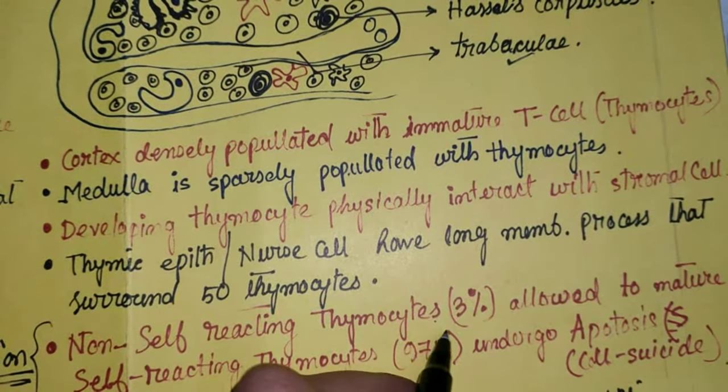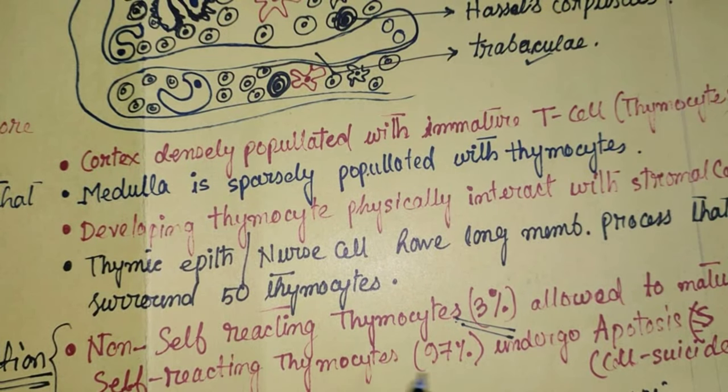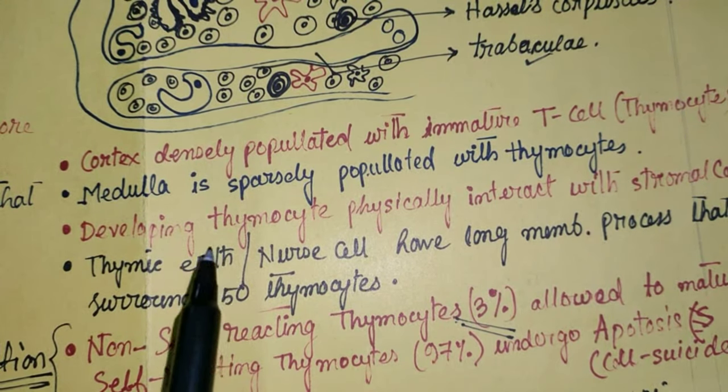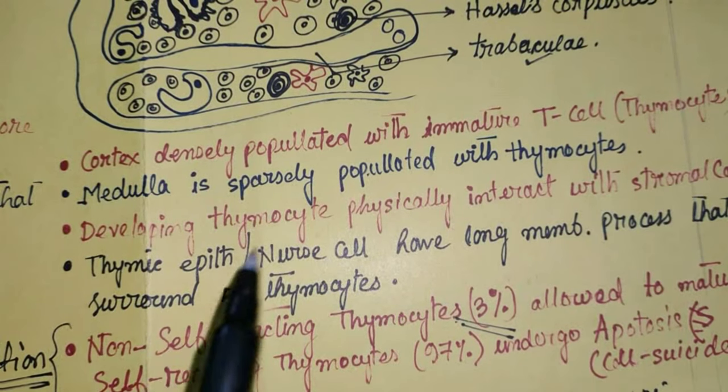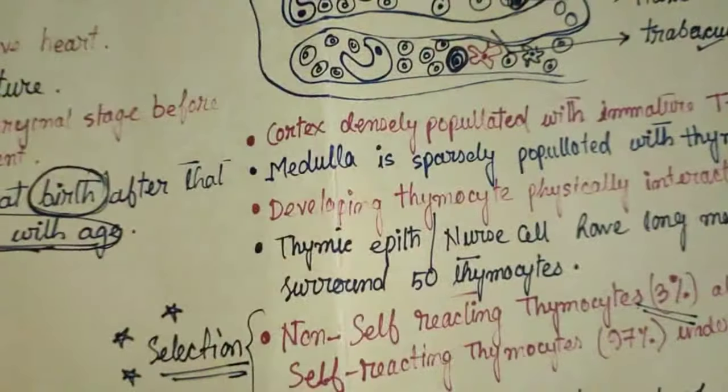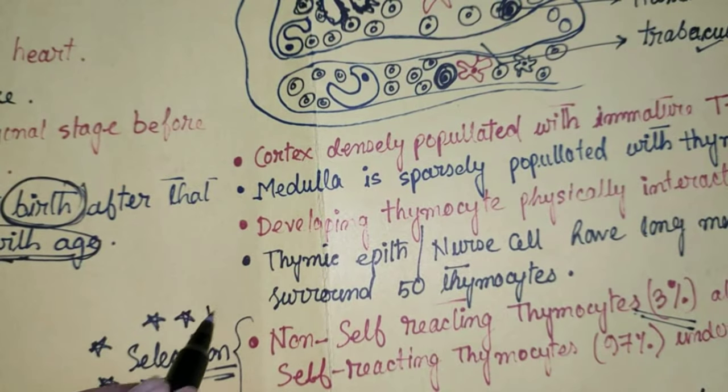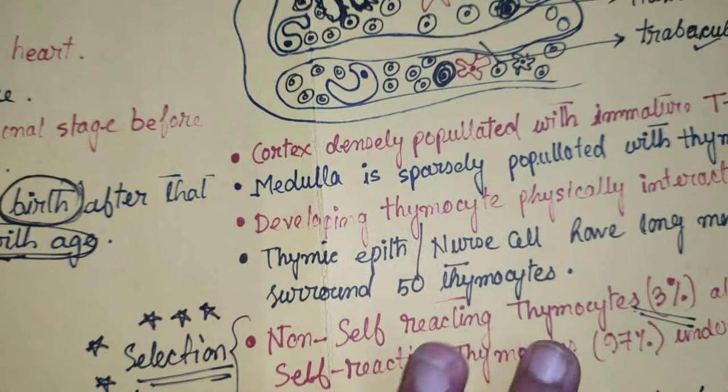Matlab, humare sharir ke andar jo normal cells hain, un cells ke upar jo different receptors hote hain — those are self-antigens — and self-reacting thymocytes react against them. So those self-reacting thymocytes undergo apoptosis. The remaining 3% are non-self-reacting thymocytes, and only those 3% undergo maturation inside the thymus. This process is called selection, and it is very important.